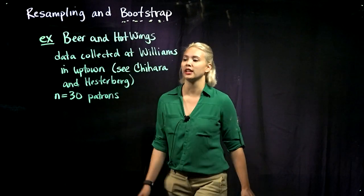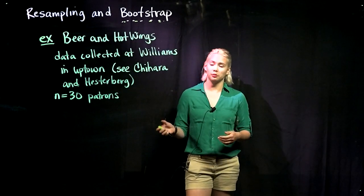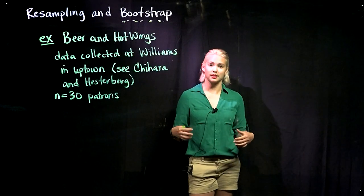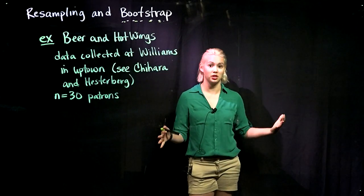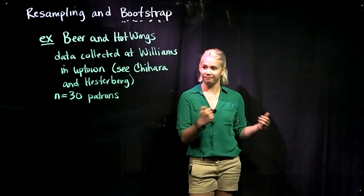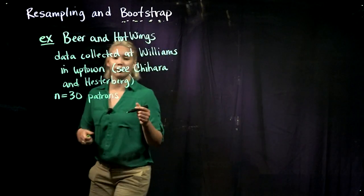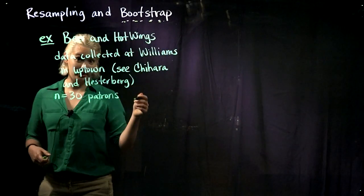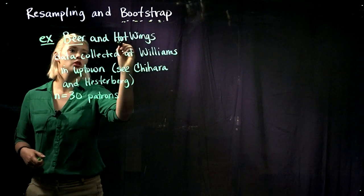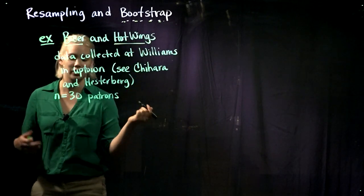We have n equals 30, and if we have a random sample, then we know that that random sample of 30 patrons represents the population of all patrons at Williams Bar and Uptown. So if we're interested in the linear relationship between the number of beers consumed and the number of hot wings consumed, we know that we're doing linear regression.